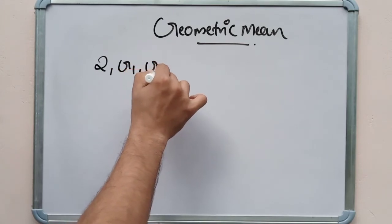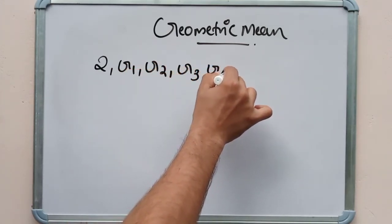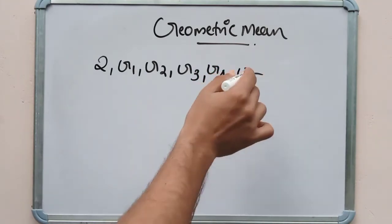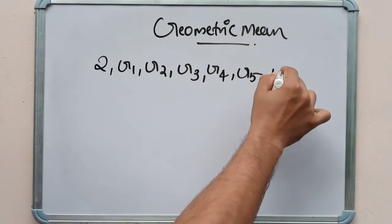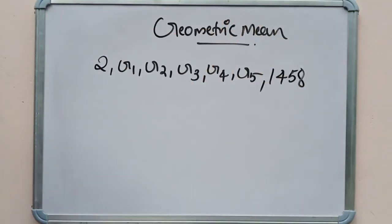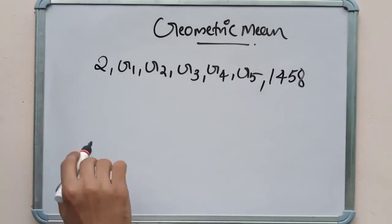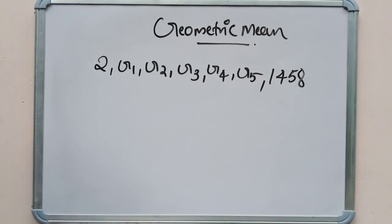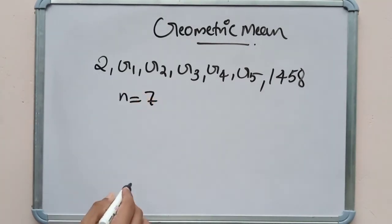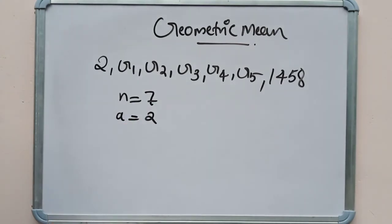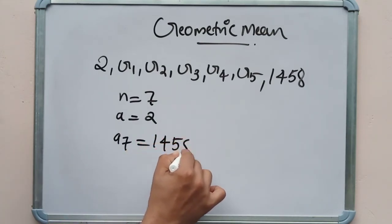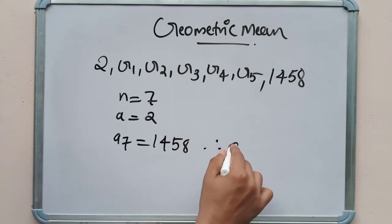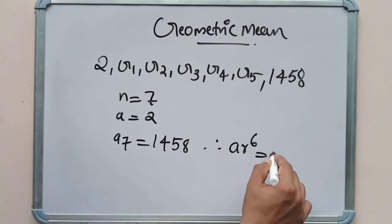Next problem: insert 5 geometric means between 2 and 1458. So we have G1, G2, G3, G4, G5 between 2 and 1458. Here a = 2, the 7th term (a·r^6) equals 1458.